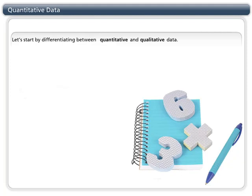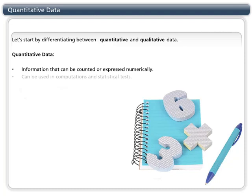Let's start by differentiating between quantitative and qualitative data. Quantitative data is information that can be counted or expressed as numbers. Since this data is numerical, it can be used in mathematical computations and statistical tests. This is also the data you'll find presented visually in tables and graphs.